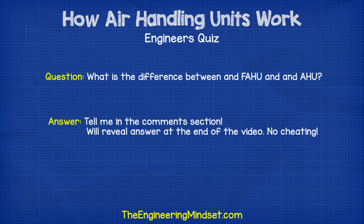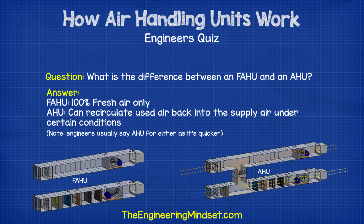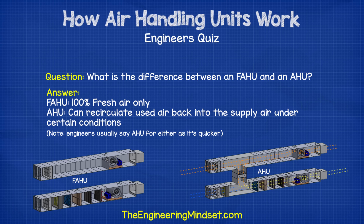The answer to the question I asked at the beginning of the video: what is the difference between an AHU and an FAHU? Simply that FAHU stands for fresh air handling unit, meaning it is an AHU except it can only handle 100% fresh outside air — it does not recirculate any return air back into the supply stream. An AHU on the other hand can recirculate some of its return air into the supply stream. The building application and local regulations will dictate when and if this strategy can be used.